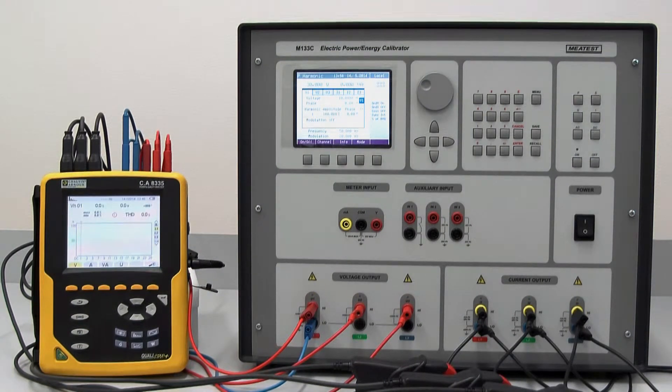Harmonic mode is designed to generate distortion up to 50th harmonic, again with both amplitude and phase shift independent on all harmonics.